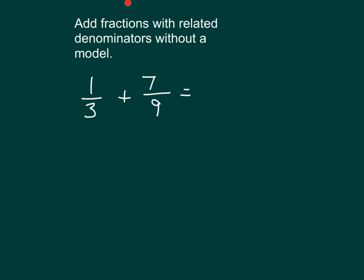Can we add fractions with related denominators without a model? Here we're asked to add one-third plus seven-ninths. Which unit is easiest to decompose? Right, thirds. Thirds can be decomposed into ninths. How many ninths make up a third? Right, three of them. Three-ninths make up a third. That would be a multiply by three in the numerator and in the denominator. We tripled each of those.